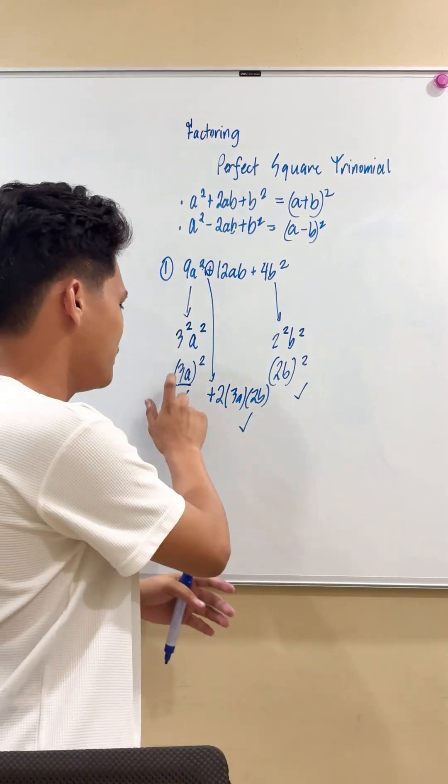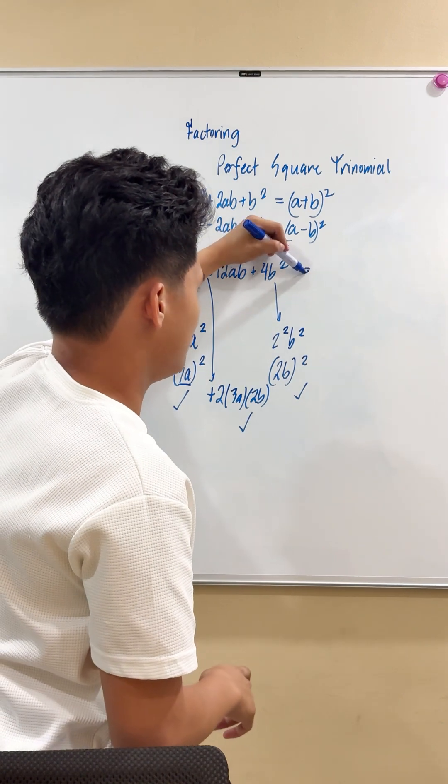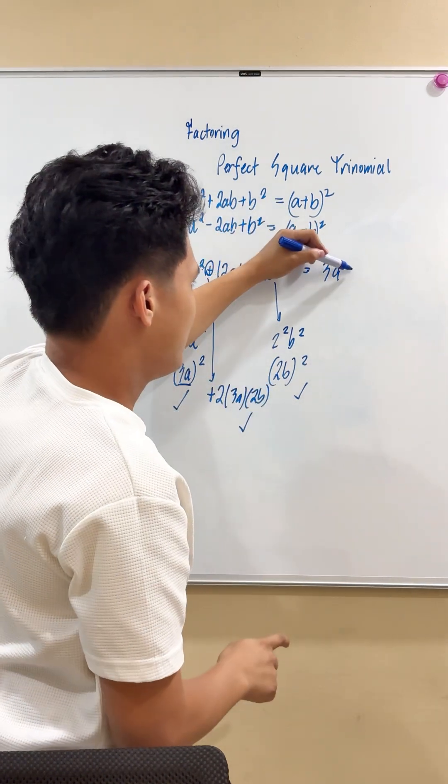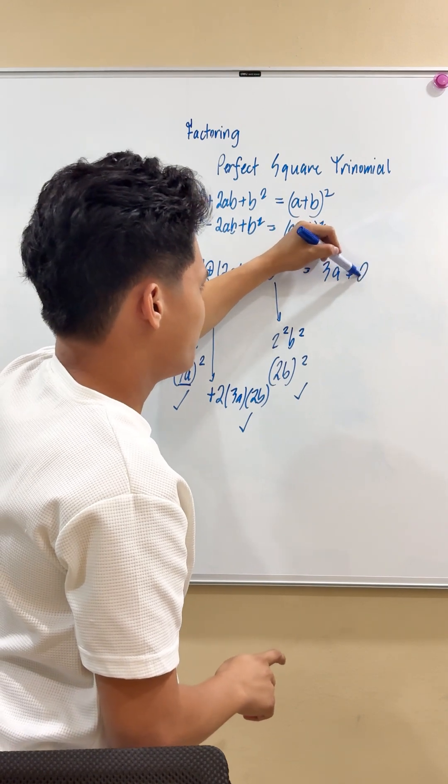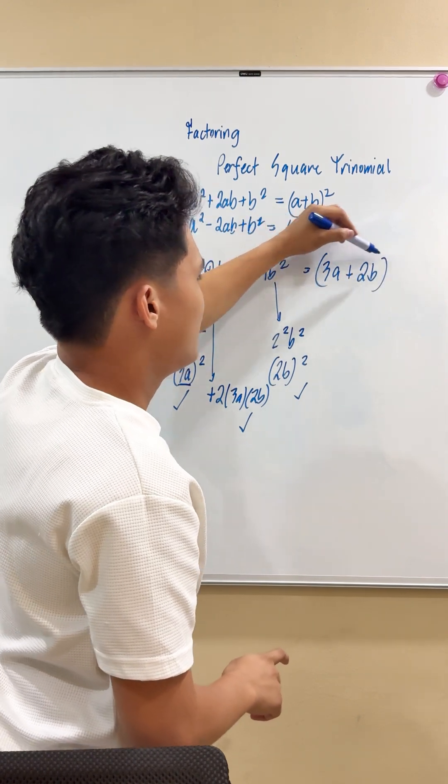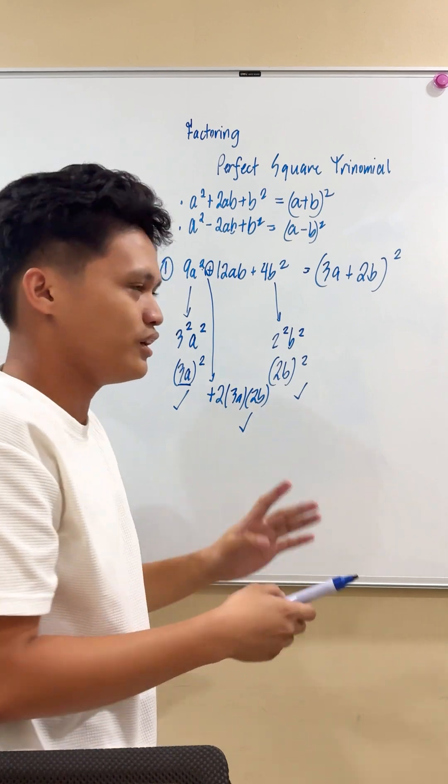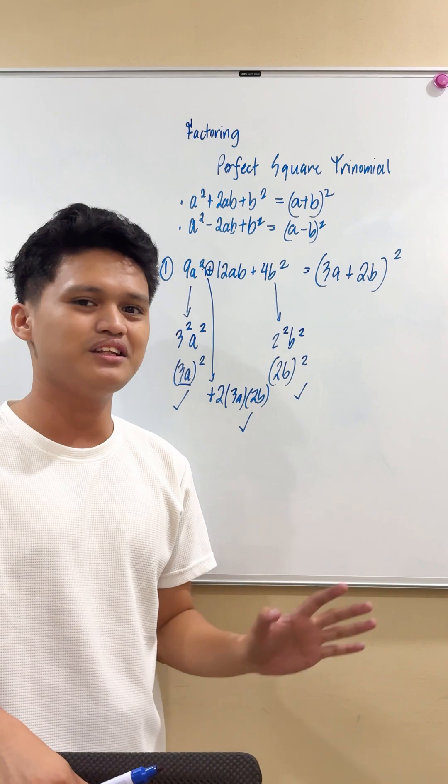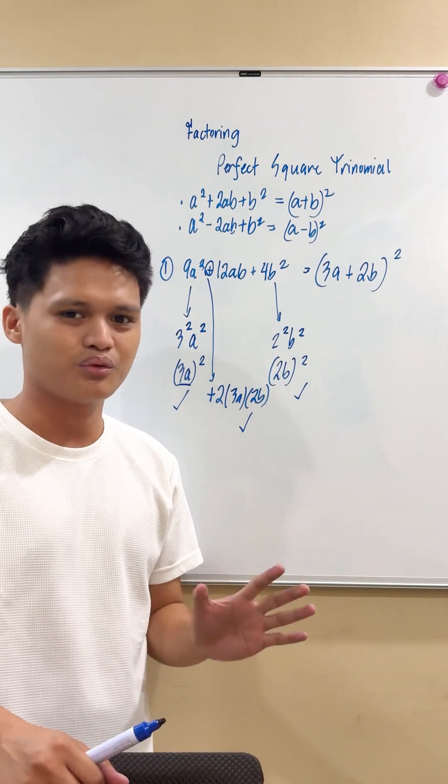So how do we factorize this one? We need to write the first term, which is 3a, the sign of the middle term, which is plus, and then the last term, which is 2b. And simply write the square. So thus, we have 9a squared plus 12ab plus 4b squared is equal to the quantity of 3a plus 2b squared.